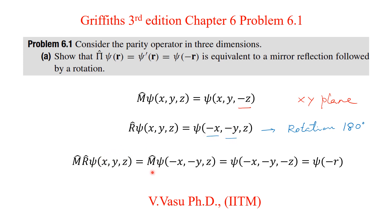First you do the rotation operation — X and Y get changed to minus X and minus Y. Then you take the reflection operation, so Z also becomes minus Z. The resulting wave function is psi of minus X, minus Y, minus Z, which is equal to psi of minus R, because all coordinates become minus.